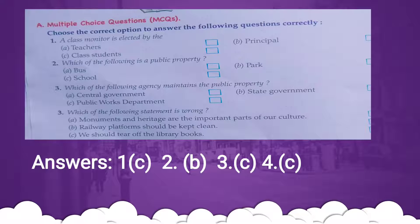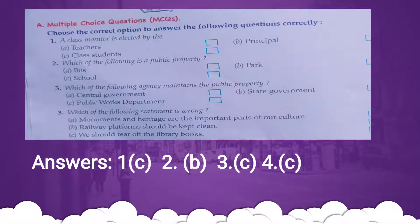The correct answer is class students — the class monitor is elected by the class students. Question two: which of the following is a public property? Options: school, school bus, park. The correct answer is park. Question three: which agency maintains public property? Options: central government, state government, public works department. The correct answer is public works department.